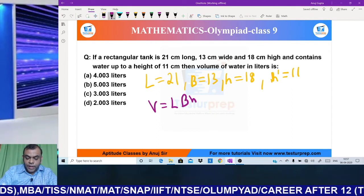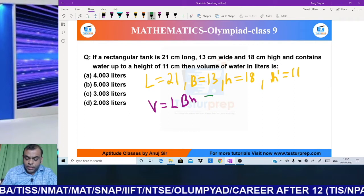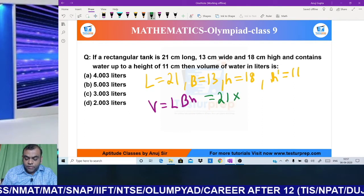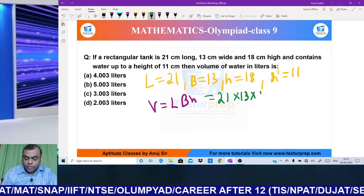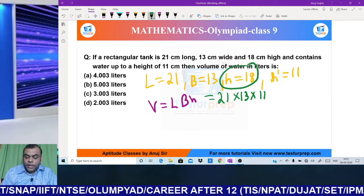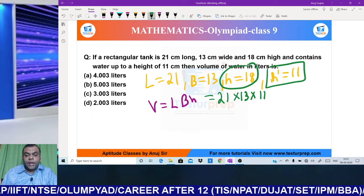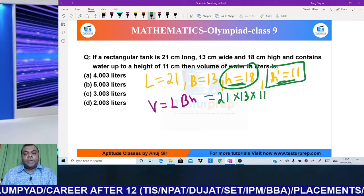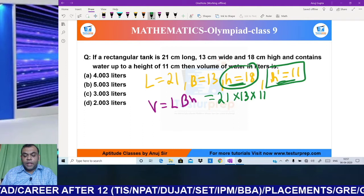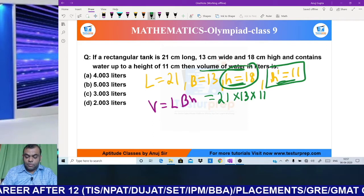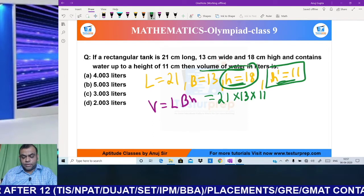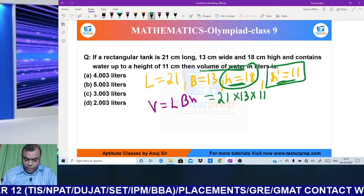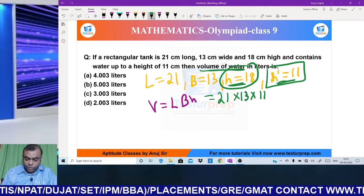Volume formula is length × breadth × height. Let us multiply 21 × 13 × 11. I put height as 11, not 18. Why? Because total capacity is 18, but water is only up to height 11, and I need to find the volume of water.